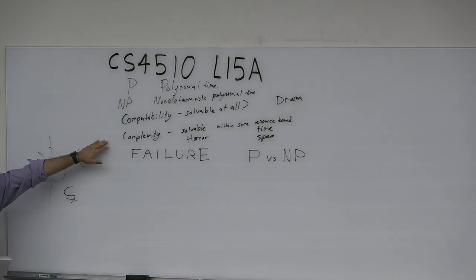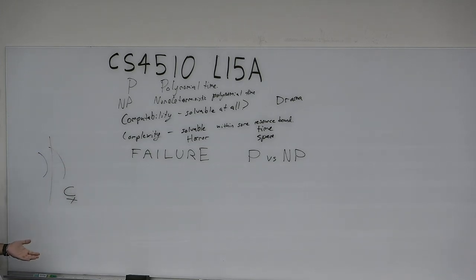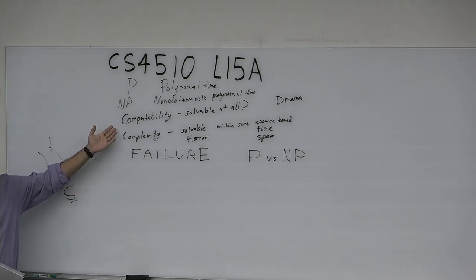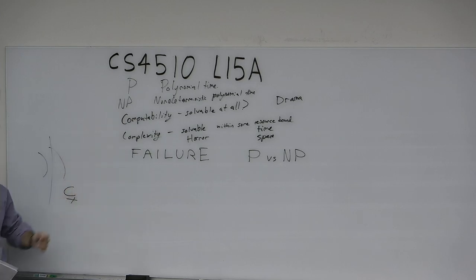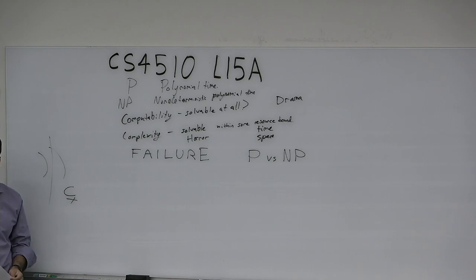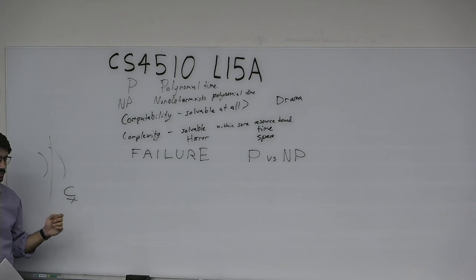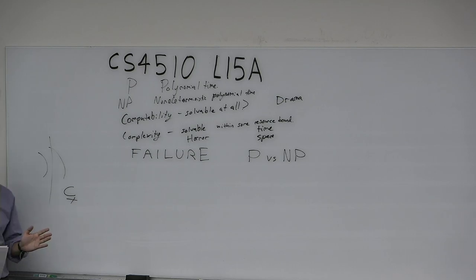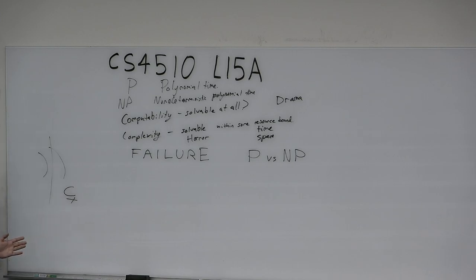Complexity is really just a restricted form of computability theory. We're asking certain problems not if they're solvable at all, but solvable within a certain resource — quite literally putting a timer on the problems of computability theory. There was some belief at the time that maybe we could separate P from NP as quickly as we could have separated the decidable from the recognizable. Then we started getting results like the relativization barrier, showing that diagonalization and related techniques cannot be used to separate these two classes.